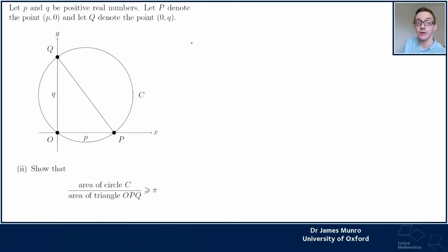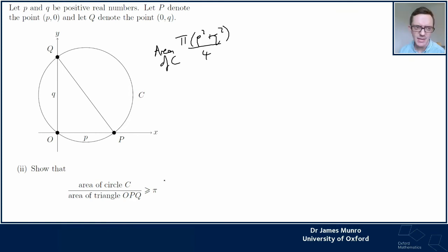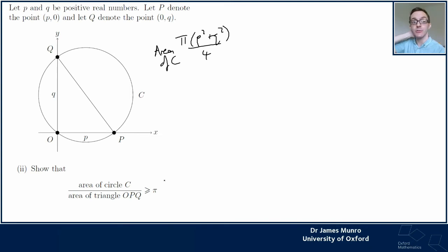Now we've got an inequality proof. The area of circle C from the previous part: we also need the area of triangle OPQ. We want to prove that their ratio is bigger than or equal to π. This feels like one of those geometry questions that turns into an algebra question - you've done some geometry to find expressions for things, but then manipulating those objects is A-level algebra.